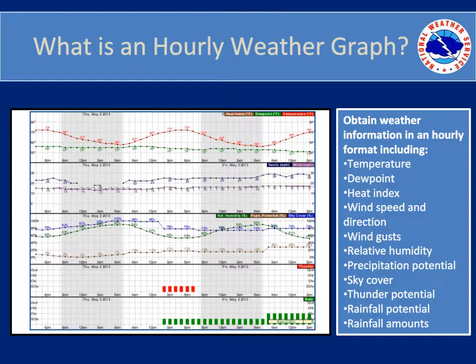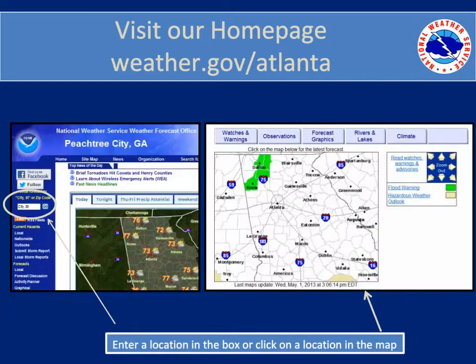Let's take a look at how you can find the hourly weather graph so you can begin using it. From your internet browser, direct your webpage to weather.gov/Atlanta. Our homepage will appear. Once here, you can reach our forecast page two different ways. The first option is to enter your city and state or zip code in the box in the upper left of the page. The second option is to scroll down to the watch warning map and click on the location of interest.